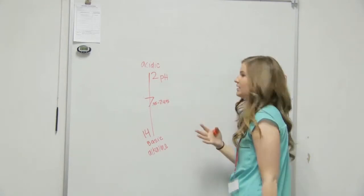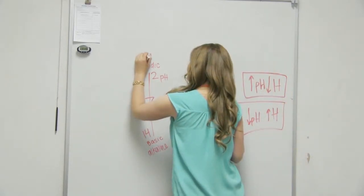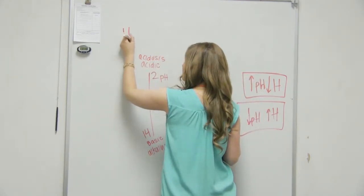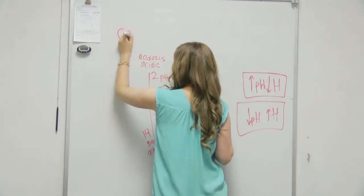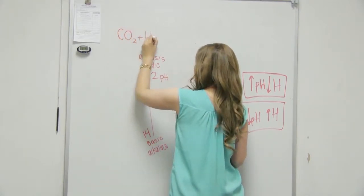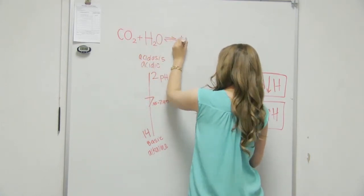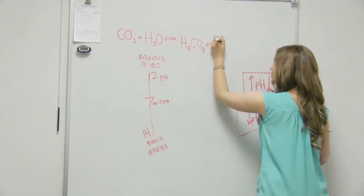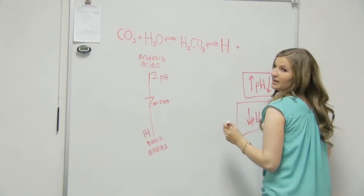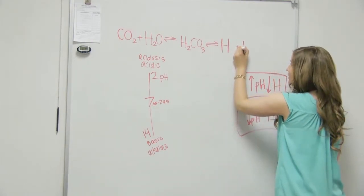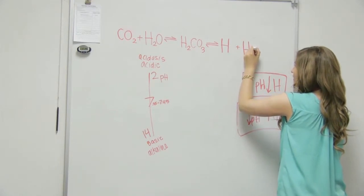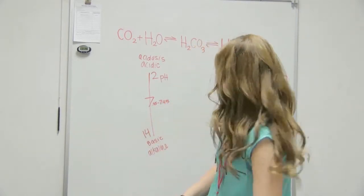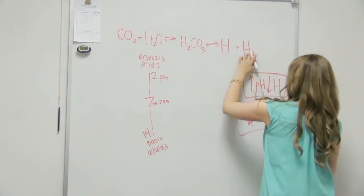And then acidity — acidosis. And then do you remember the reversible reaction? CO2 plus H2O gives H2CO3. And then that breaks into H⁺ plus HCO3⁻. I think it's HCO3 minus — HCO3. So HCO3, there's that three at the end.